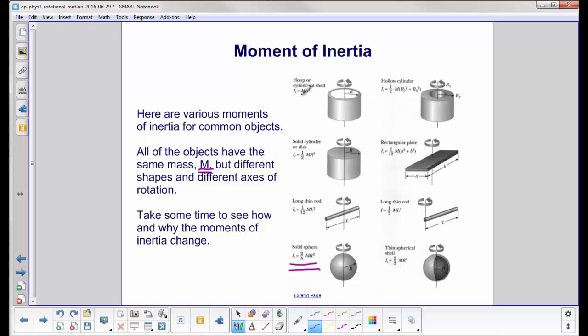The hoop, or the shell, has a moment of inertia of mr squared. That's greater than 2 fifths mr squared. More of the mass is further away from this axis of rotation.